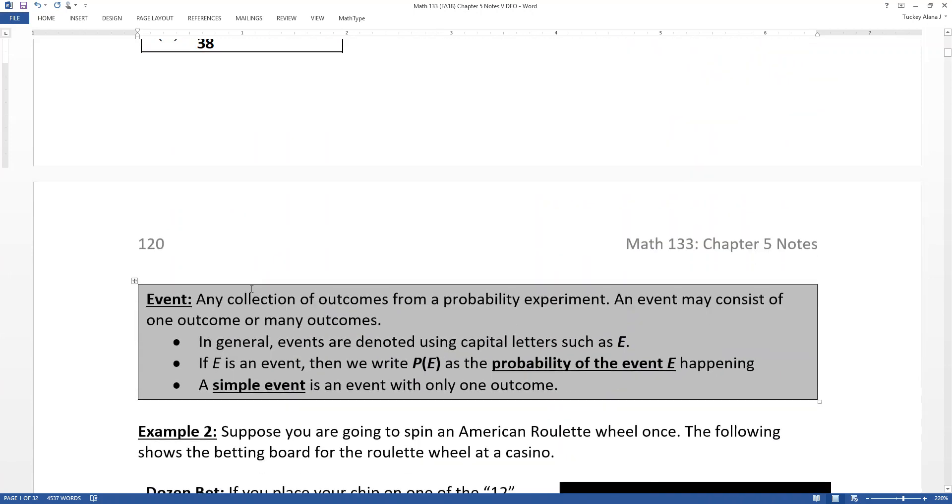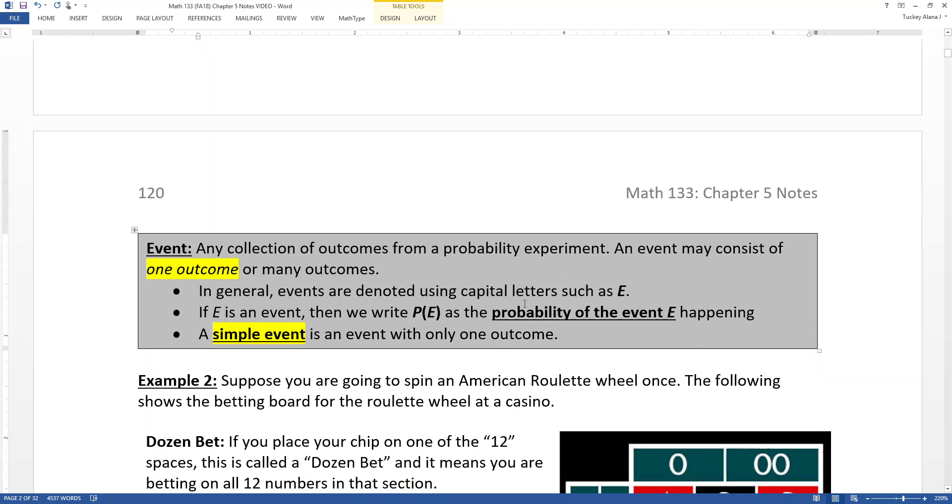Continuing on with our definitions, an event. An event is any collection of outcomes from a probability experiment. An event can consist of one outcome or many outcomes. If it's only one outcome, that's called a simple event. So, for example, the 4 up above, that's a simple event. So simple events are one outcome. We don't deal with them that much because they're simple, so they're easier to do, but we have them every once in a while. Other events, you denote with a capital letter E or F or G. There's nothing special. They just said E because event, the word, starts with E.